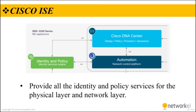When it comes to Cisco ISE, the basic role of ISE is to provide all the identity and policy services for the physical layer and network layer. ISE provides network access control and identity services for dynamic endpoint-to-group mapping and policy definition.